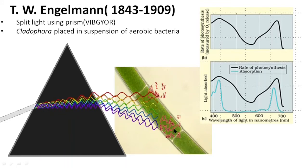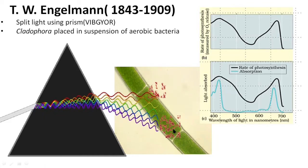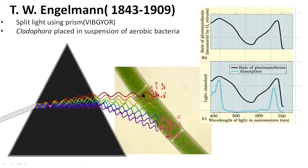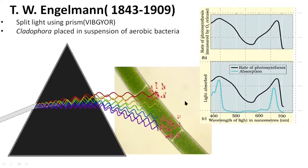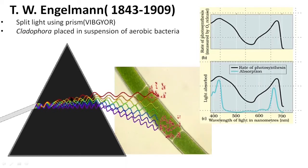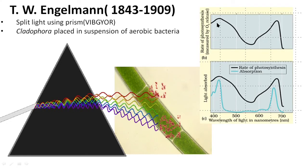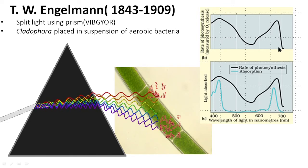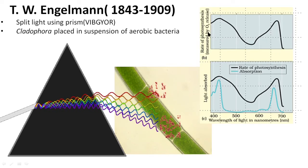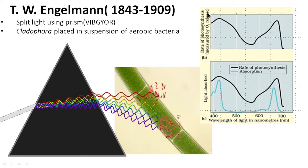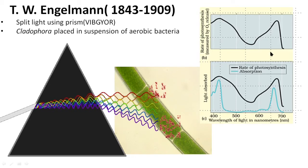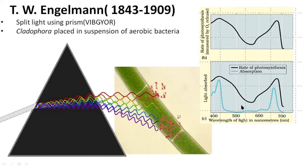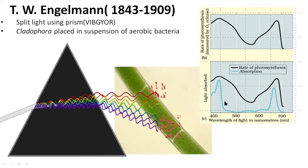At the end of the experiment, Engelman found that aerobic bacteria gathered around the algal filament in two regions: where blue light was falling and where red light was falling. He concluded that the blue and red regions of visible light are responsible for photosynthesis. This was the first description of the action spectrum of photosynthesis. The action spectrum indicates the rate of photosynthesis at different wavelengths of light, with the x-axis representing wavelength and the y-axis representing rate of photosynthesis measured by oxygen release.